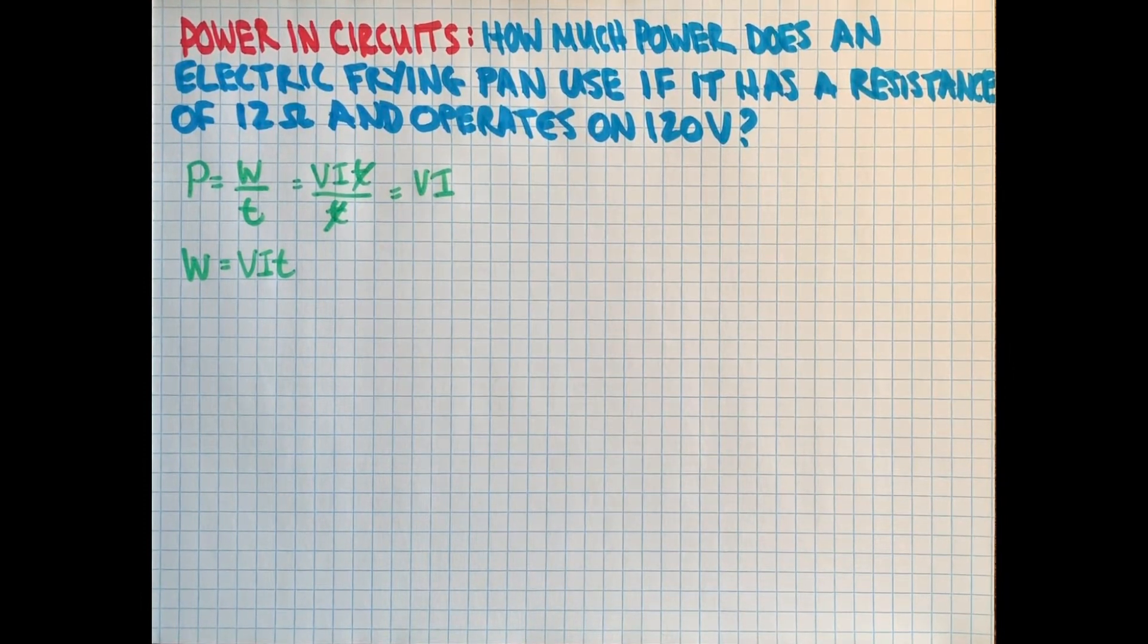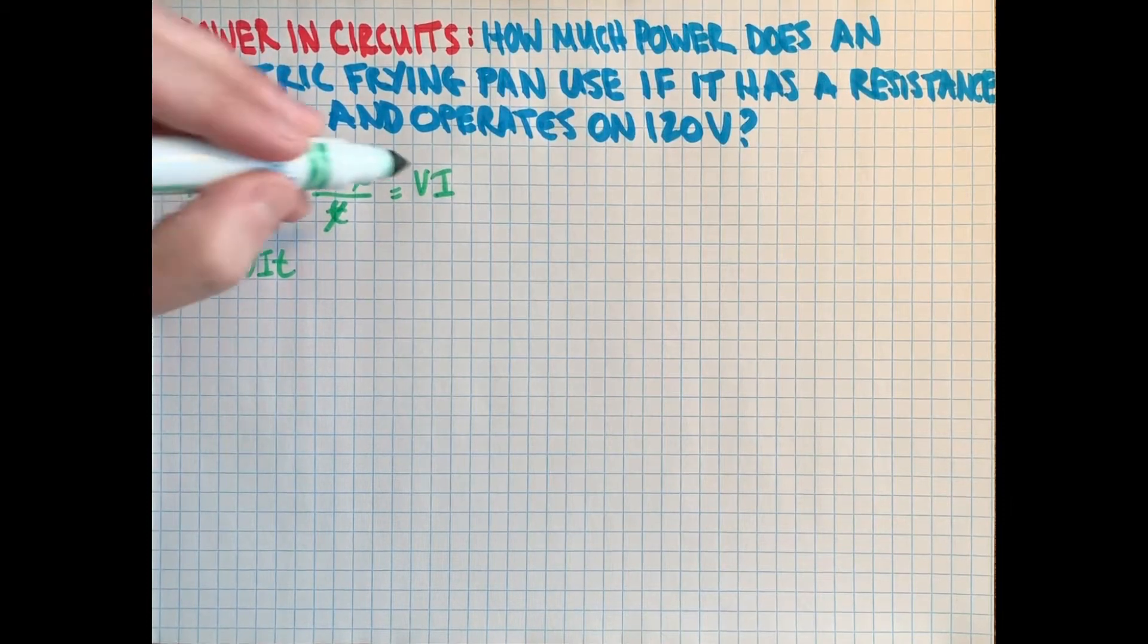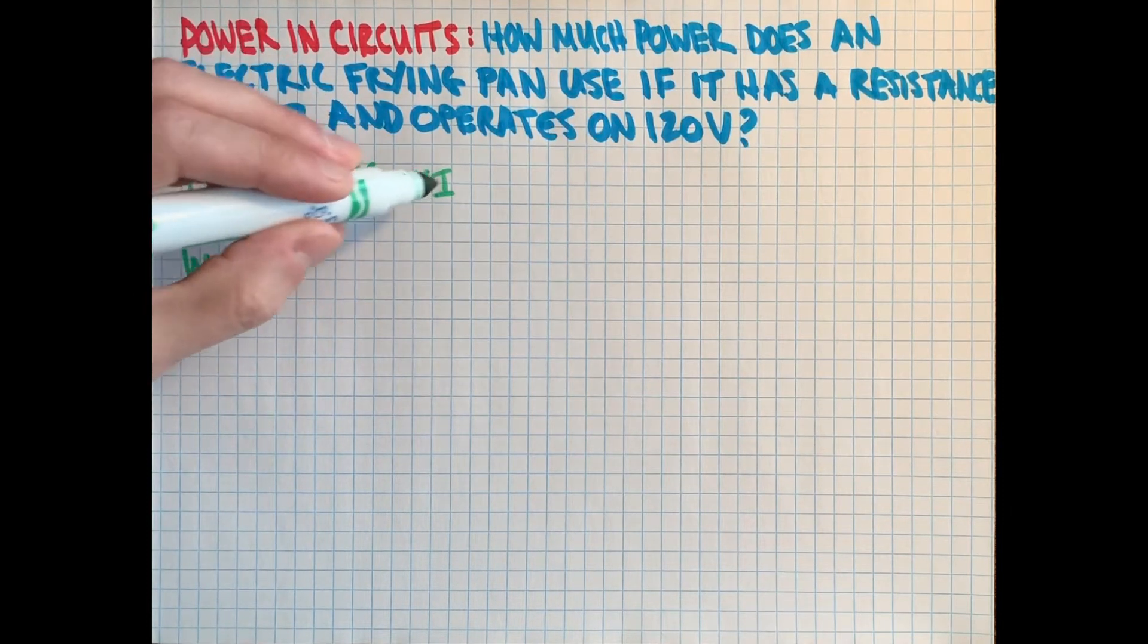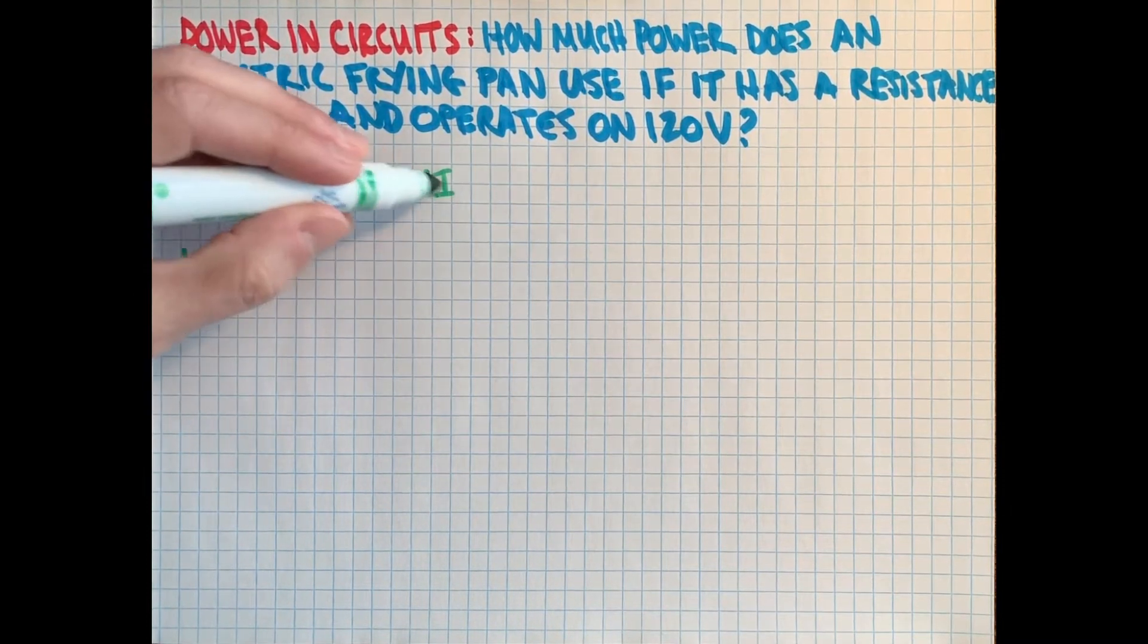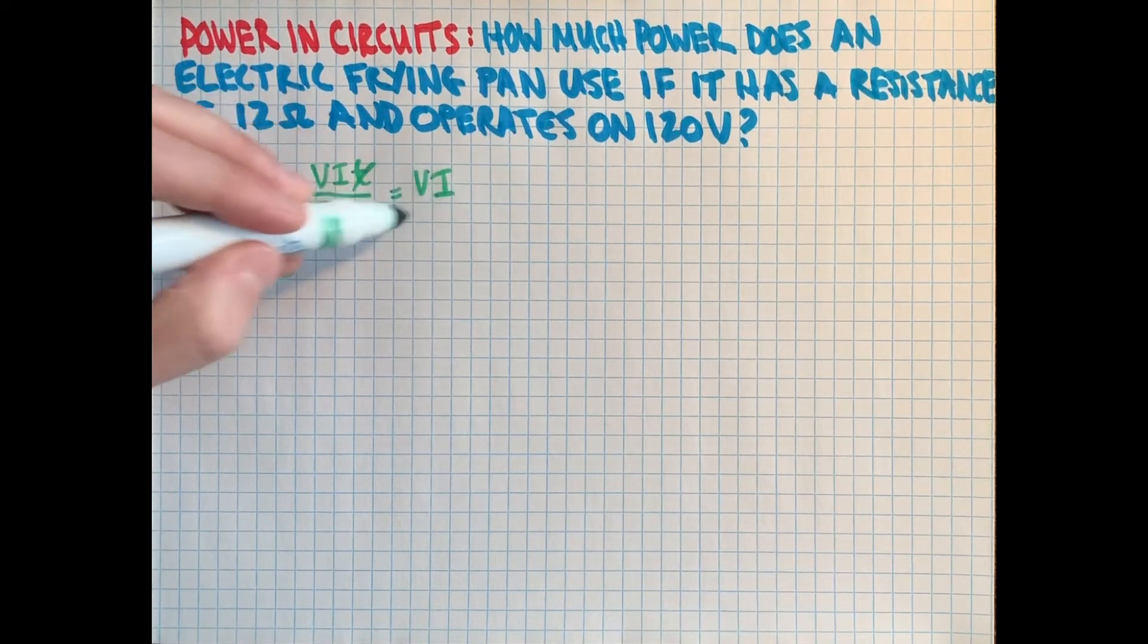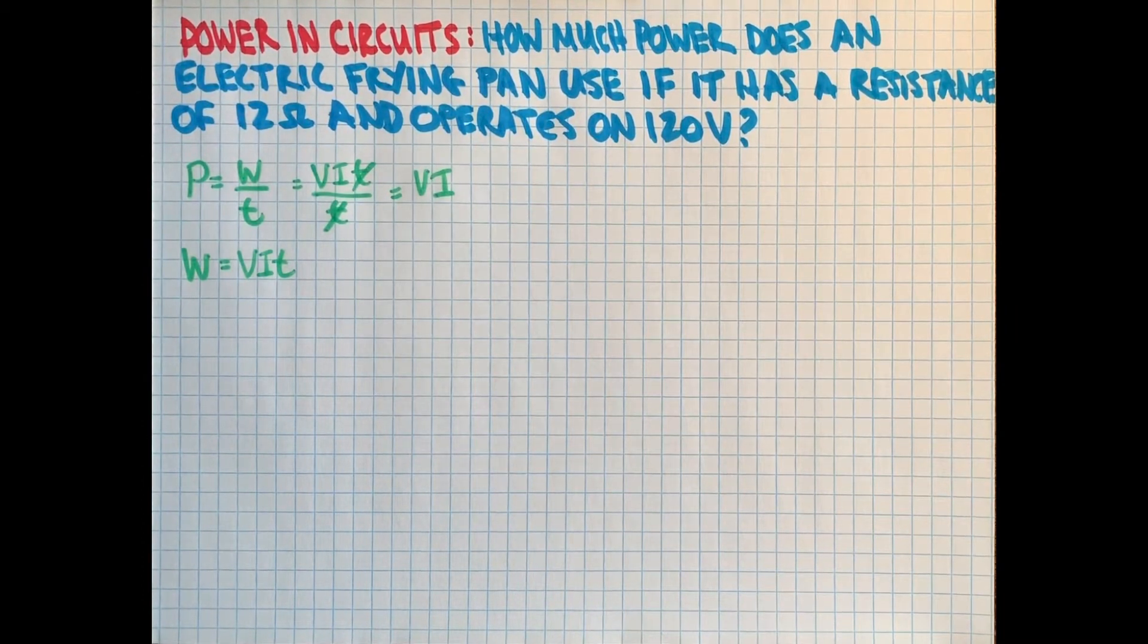We have a new formula for power in a circuit, which is just the voltage times the current. Remember that power is a rate, and so the time didn't actually go away. It's built into the current, which is Q over T. So if you wanted to write this V times Q over T, the T is still there, which is built into the current. So we are still talking about a rate of energy use here.